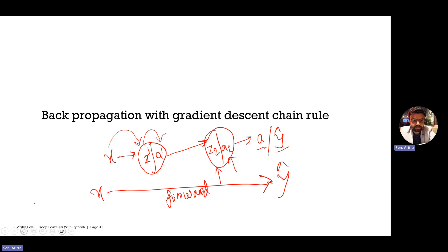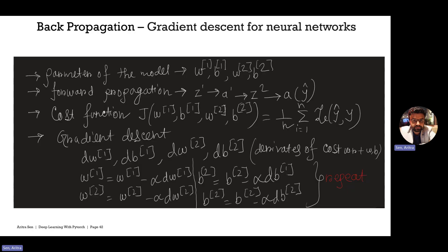So this is forward propagation — a heads-up before we go to the backward propagation step. Once we do forward propagation, let's look at what backward propagation is. We have done a lot of groundwork with linear regression and logistic regression — understanding the math, how we calculate the loss, how we calculate the derivative of loss with respect to model parameters, and how we use those derivatives to update the model parameters. Similarly, we will do that for neural networks.